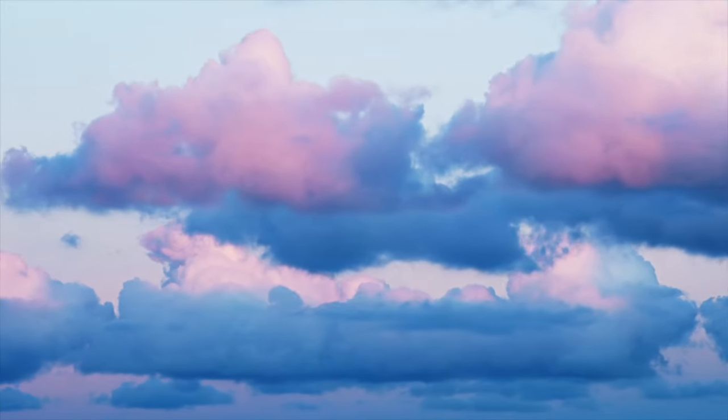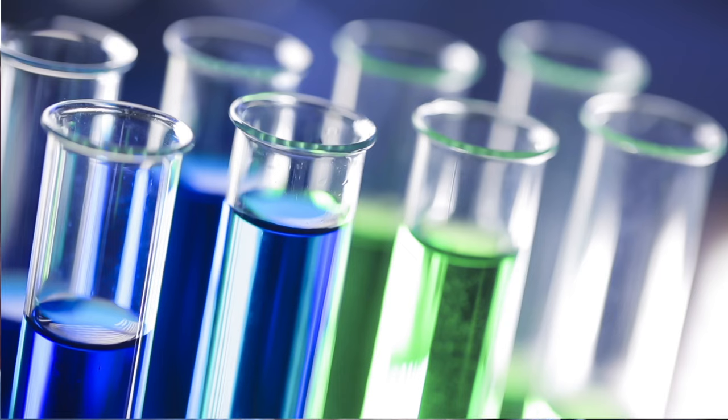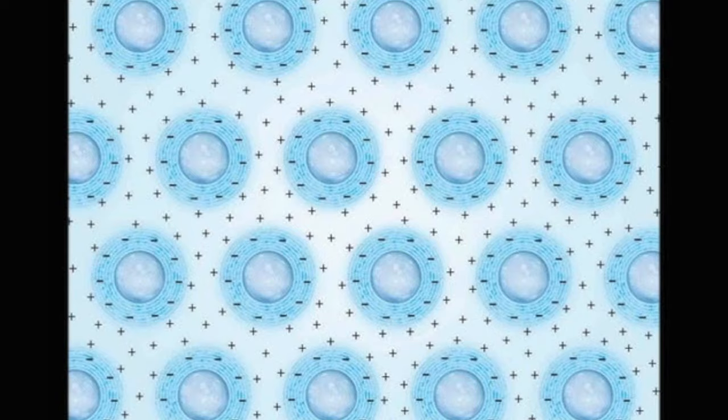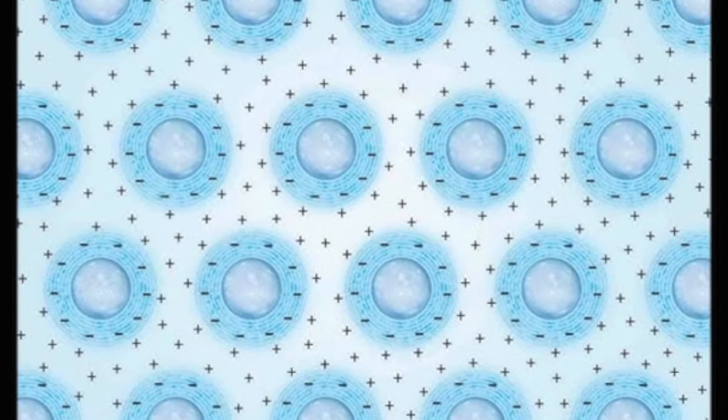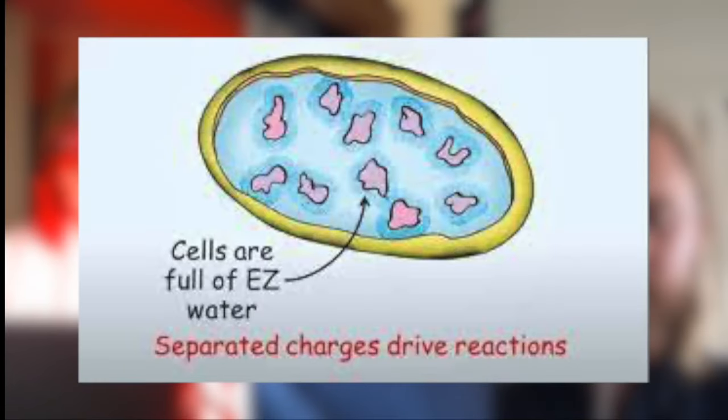H2O has three phases: the solid, liquid, and vapor phases. In our experimental work, we discovered what amounts to a different phase of water, and that phase fills our bodies, fills all our cells. The physical chemical properties of this so-called fourth phase water — sometimes we call it EZ or exclusion zone water, because it has a tendency to exclude particles and solids, just like ice — it resembles ice in some ways. It's not solid; it's gel-like.